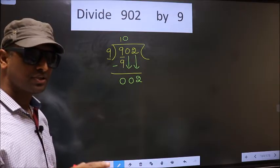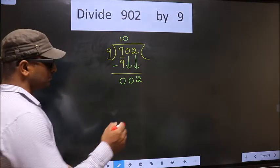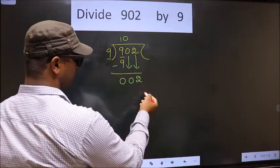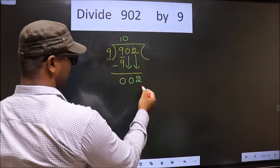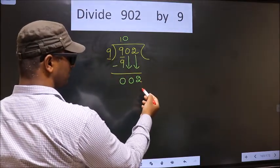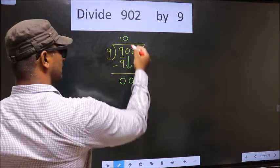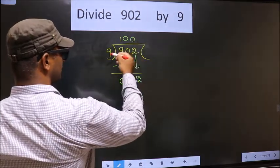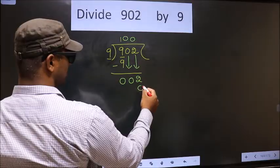Instead, what you should think of is, what number should we write here? If we write 9 here, that is larger than 2. So what we do is, we take 0 here. We take 0 here. So 9 into 0, 0.